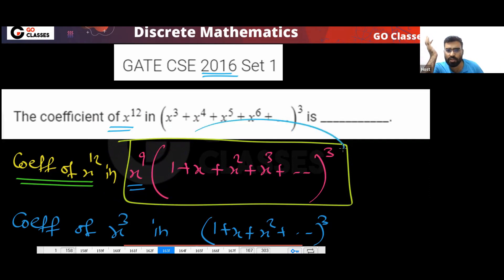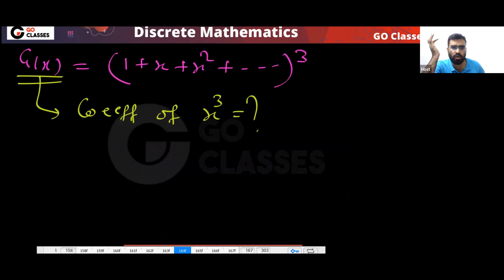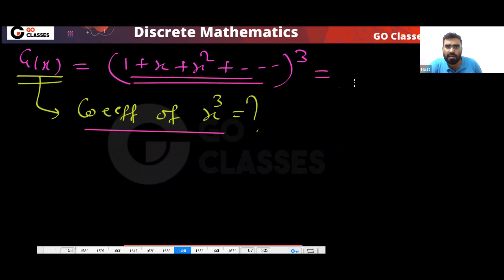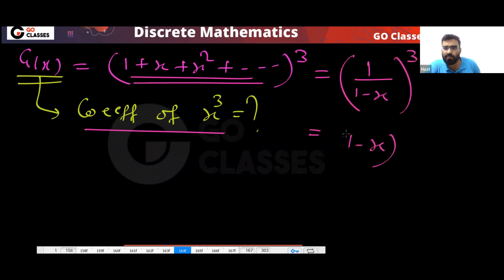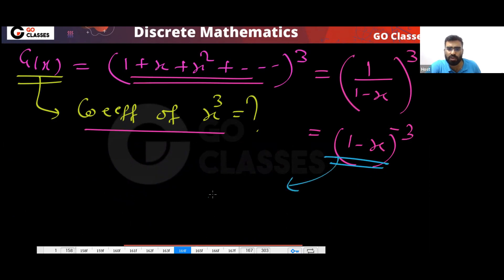Now find the coefficient of x power 3 in this expression. Inside you have an infinite GP, which equals 1/(1 - x), so the whole expression is 1/(1 - x) power 3, which is (1 - x) power minus 3. We want the coefficient of x cube in this.